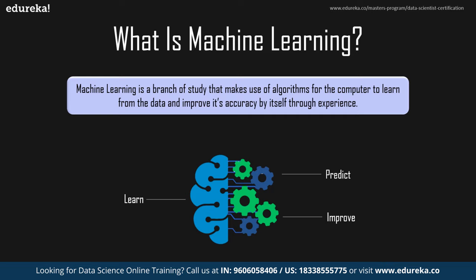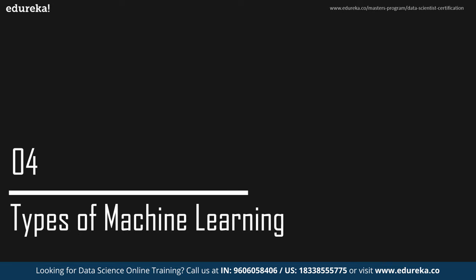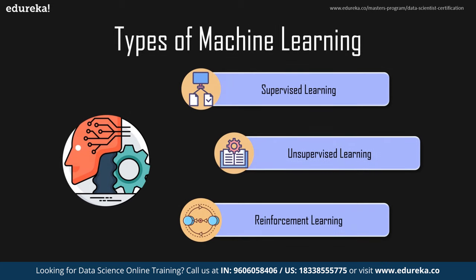Machine learning is incredibly important nowadays and will continue to be in the future, since it has the ability to solve complicated real-world problems in a scalable way. There are various types of machine learning: supervised, unsupervised, and reinforcement learning. In supervised learning, you train the machine using labeled data — data that is already tagged with the correct answer. Unsupervised learning deals with unlabeled data, where the model works on its own to discover patterns not previously discovered.